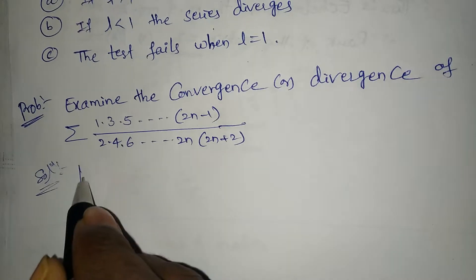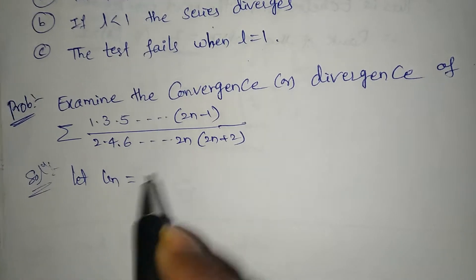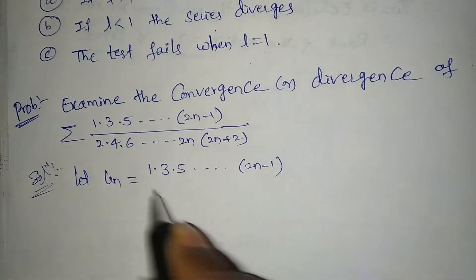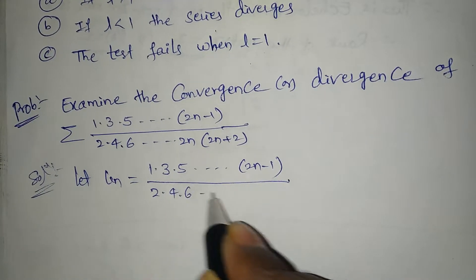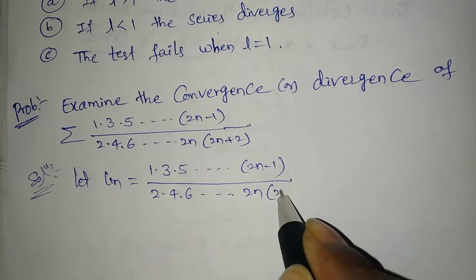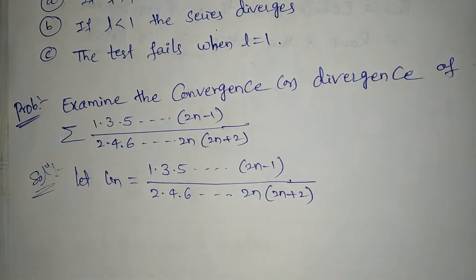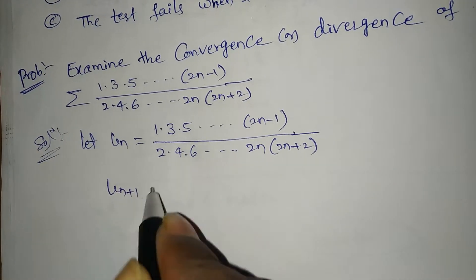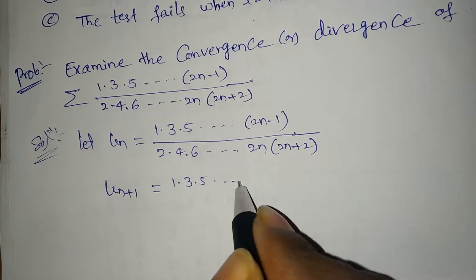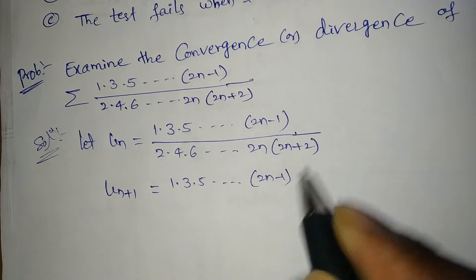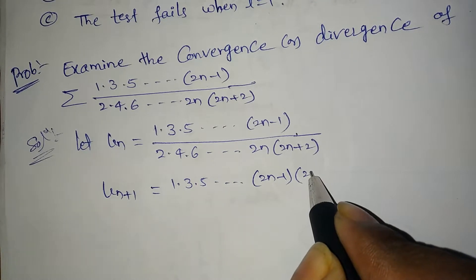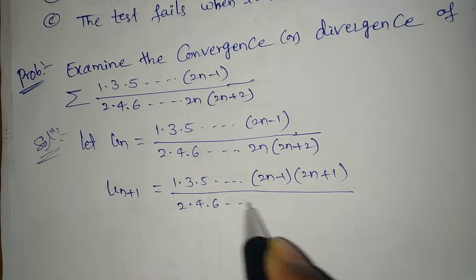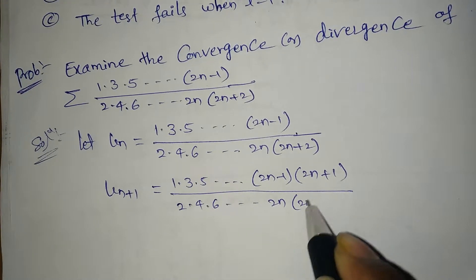Solution: Let Un equal to 1·3·5···(2n−1) divided by 2·4·6···(2n)·(2n+2). Now replacing n with n+1, Un+1 equals 1·3·5···(2n−1)·(2n+1) divided by 2·4·6···(2n+2)·(2n+4).